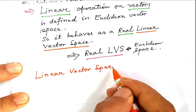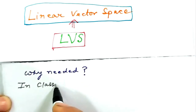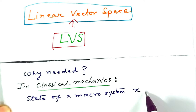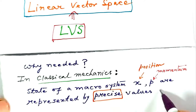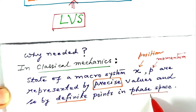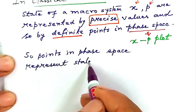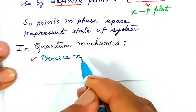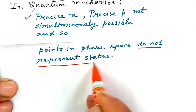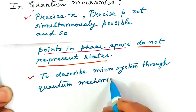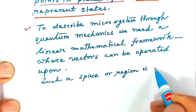Let us now discuss linear vector space, often abbreviated as LVS. Why is it needed at all? In classical mechanics, the state of a macro-system is described by position x and momentum p — represented by precise values and definite points in phase space. In quantum mechanics, precise x and precise p are not simultaneously possible, so points in phase space do not represent states. To describe a microsystem through quantum mechanics, we need a linear mathematical framework where vectors can be operated upon — such a space is a linear vector space.